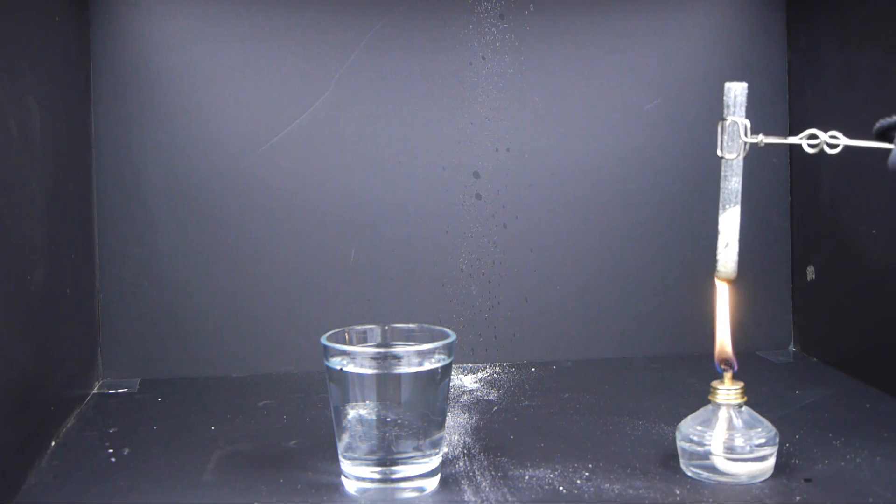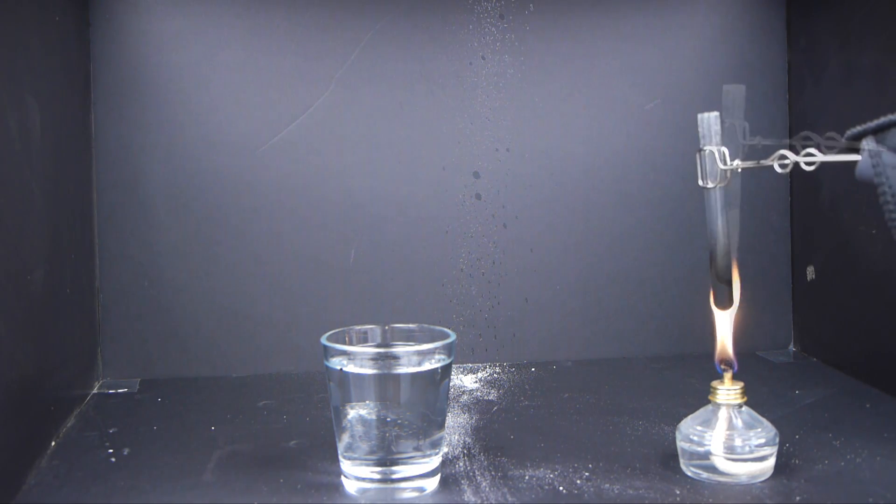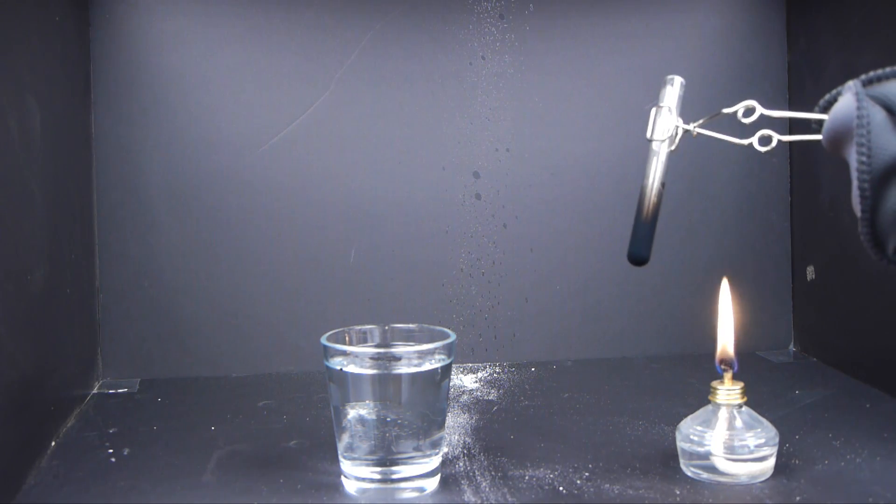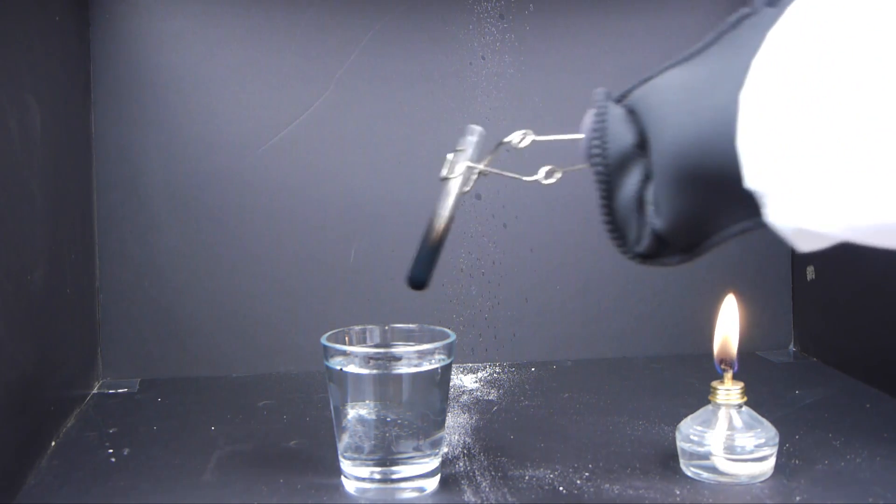When the test tube is submerged in cold water, the glass forms tiny cracks. The water enters and gets into the tube and vaporizes, causing a micro-explosion. The hot wax is then ejected from the tube quickly as oxygen is displaced from the tube itself.